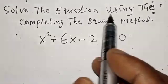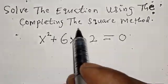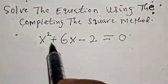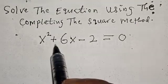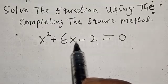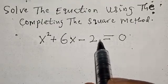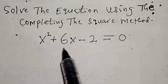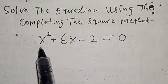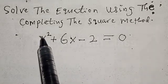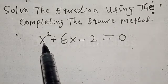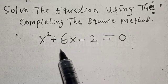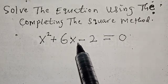Solve the equation using the completing the square method. x squared plus 6x minus 2 is equal to 0. Hi everyone, welcome to my class. In this class, we want to look at how we can quickly solve this quadratic equation using the completing the square method.